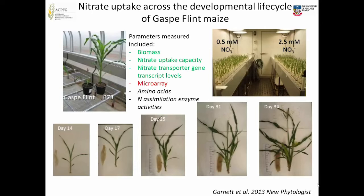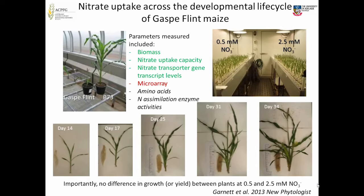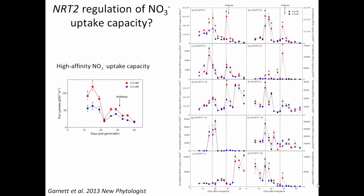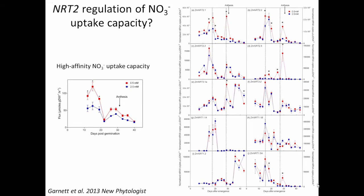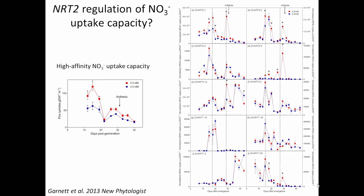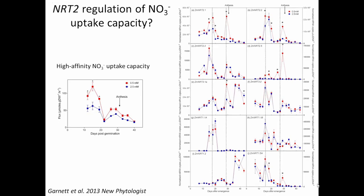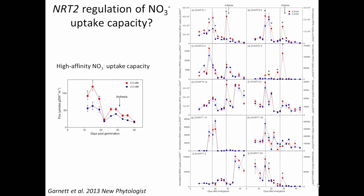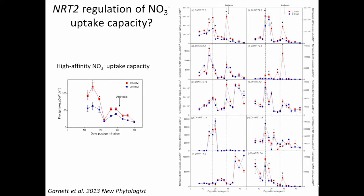We were a bit disappointed when we first analysed the results. In terms of total biomass and grain yield, there was no difference between 0.5 and 2.5 millimolar nitrate. But then we looked at the uptake capacity, measured using N15 at 100 micromolar nitrate, which gives you an idea of how hungry the plant is. We saw huge differences between the low concentration plants and high concentration plants — the plants on low concentration ramped up their uptake capacity to meet demand, and they did that successfully without a difference in biomass or grain yield.